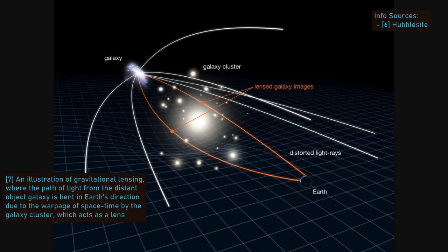A gravitational lens occurs when the gravitational field of a massive foreground object distorts and magnifies the light from an object behind it.